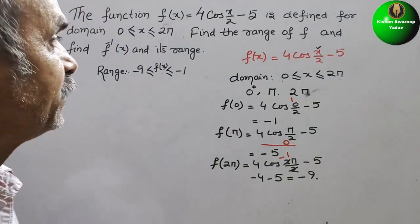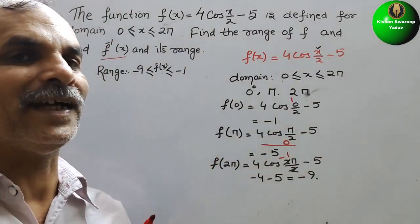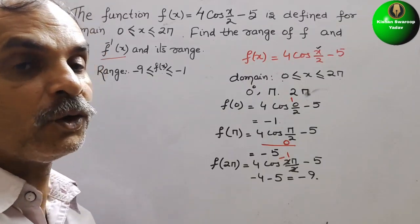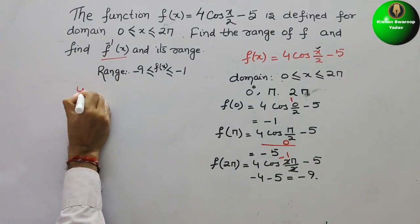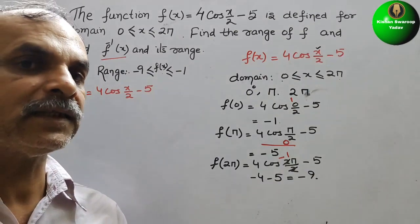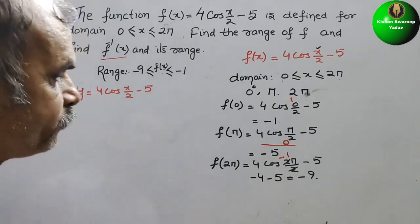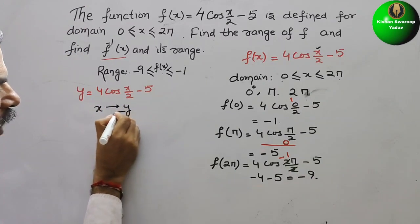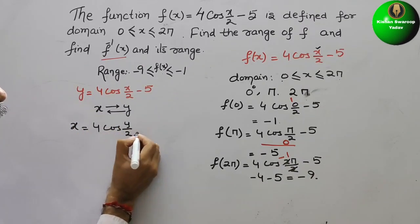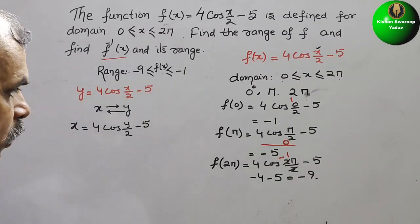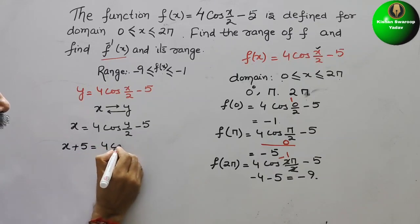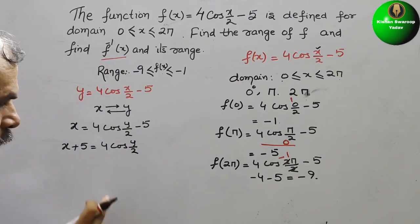Next, they have asked us to find f inverse of x. So we take y equal to 4cos(x/2) minus 5. Then we replace x with y and y with x. So we write x equal to 4cos(y/2) minus 5. Now bring minus 5 to this side — it becomes plus 5. So x plus 5 is equal to 4cos(y/2). Now 4 comes down.